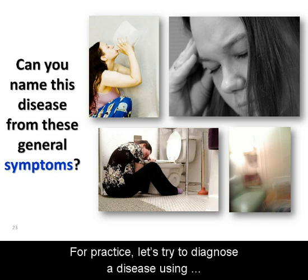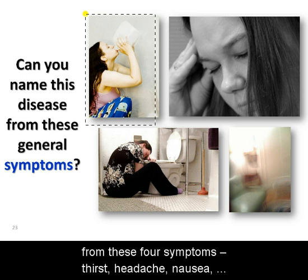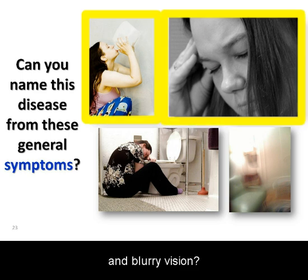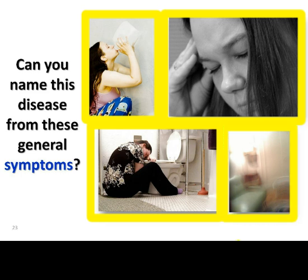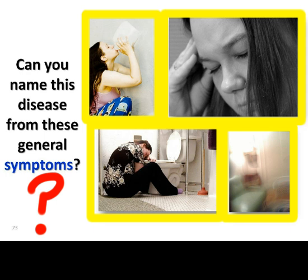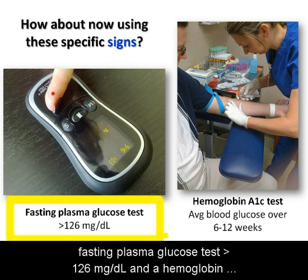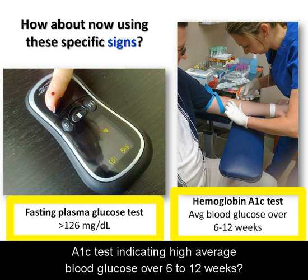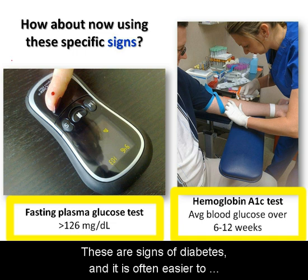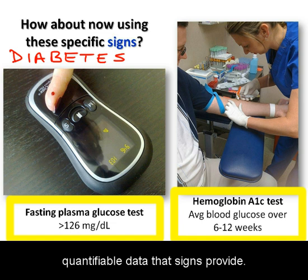For practice, let's try to diagnose a disease using symptoms and signs. Can you name this disease from these four symptoms: thirst, headache, nausea, and blurry vision? Pretty tough, huh? These symptoms could describe any number of possible diseases. How about now if we consider these two signs? A fasting plasma glucose test greater than 126 mg per deciliter, and a hemoglobin A1c test indicating high average blood glucose over 6 to 12 weeks. These are signs of diabetes, and it is often easier to determine a disease from the more objective and quantifiable data that signs provide.